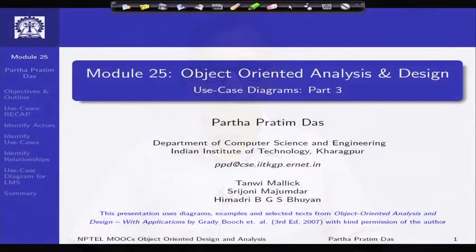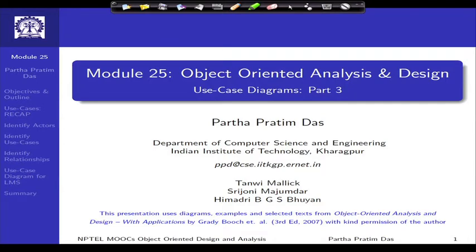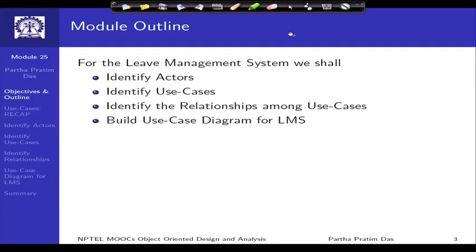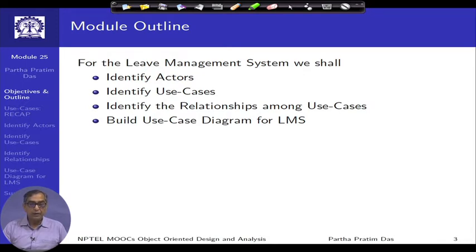Welcome to module 25 of Object Oriented Analysis and Design. We have been discussing use case diagrams and have seen all the major components that constitute a use case diagram. In this module, we will focus on analyzing the leaf management system specification further, identify use cases, and conclude with a first-level tentative use case diagram of the LMS system. Before that, let me recapitulate some major features of use case diagrams we have already discussed. This will be the outline for this module.